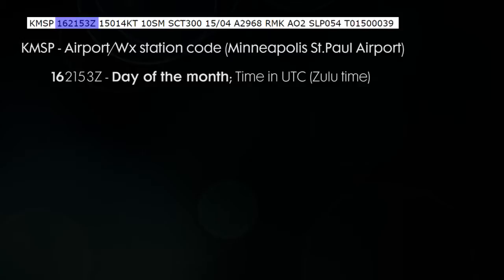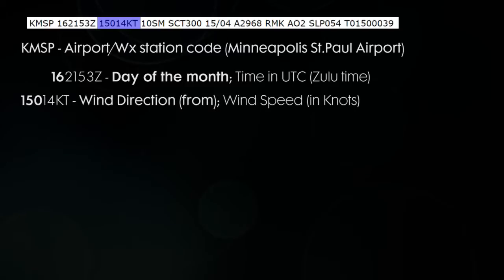You might as well get used to Zulu time because that's standard aviation time that we use. The next part is the wind direction and speed. So we have winds coming from 150 degrees at 14 knots — in other words, from the southeast at 14 knots, and it's always going to be in knots.